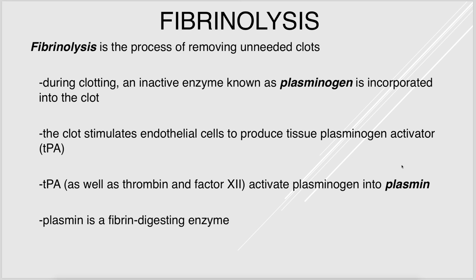We don't want these clots to hang around forever, so the process of removing them is fibrinolysis. During clotting, an inactive enzyme known as plasminogen is incorporated into the clot. The clot that formed will cause endothelial cells — the cells that line the blood vessel — to produce TPA, which is tissue plasminogen activator. TPA activates plasminogen into the active form plasmin, and plasmin will break down the fibrin mesh and start the process of dissolving the clot.